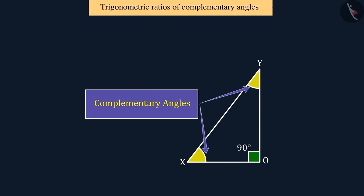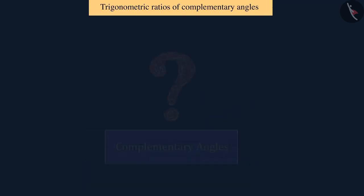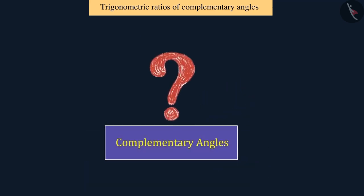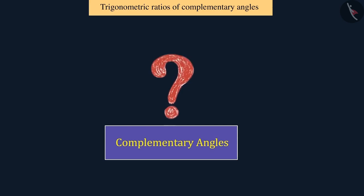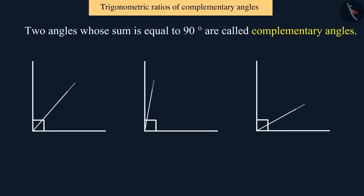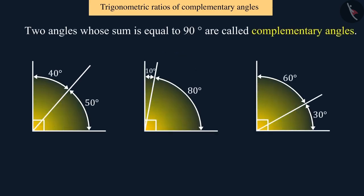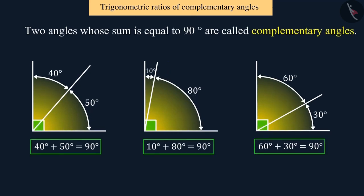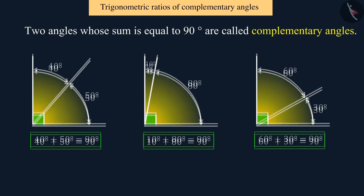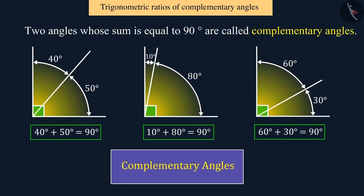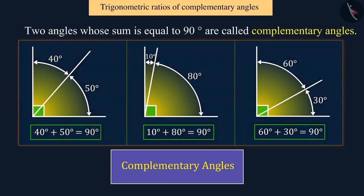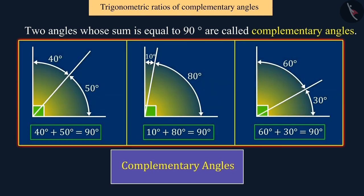Let's have a general discussion. Can you tell what is the meaning of complementary angles? Any two angles whose sum is equal to 90 degrees are called complementary angles, which we can understand with these examples.